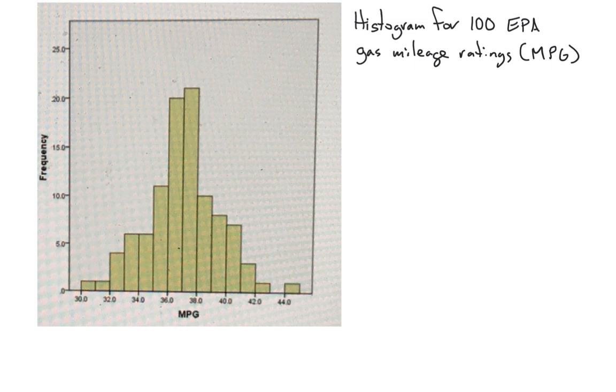And then we can ask questions along the lines of, well, maybe we could say what's roughly the cutoff for the highest 25% of gas mileage ratings. So this is the larger bit of the data. Since there's 100 data points, it'll be 25 mileage ratings. So pause the video and see if you can work that out yourself. Maybe going back to the frequency table will help you as well.